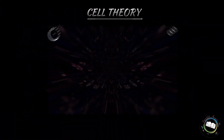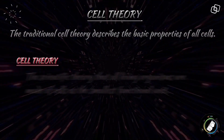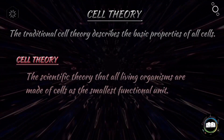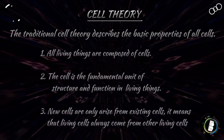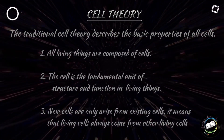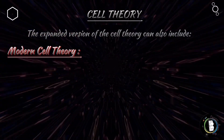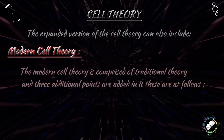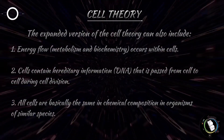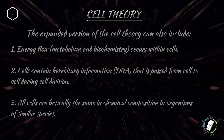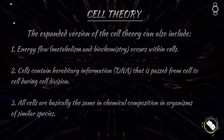The cell theory is one of the fundamental theories of biology. The original theory was proposed by Schleiden and Schwann in 1838, which states that all living things are made up of cells and arise from a pre-existing cell. Later on, the original theory was expanded by scientists and named the modern cell theory, which states that energy flow occurs within cells, cells contain genetic material, and that all cells are essentially the same in chemical composition.